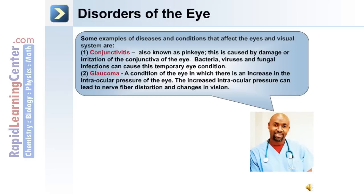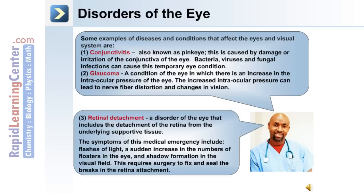Examples of diseases and conditions that affect the eyes and visual system: 1. Conjunctivitis, also known as pink eye, is caused by damage or irritation of the conjunctiva; bacteria, viruses, and fungal infections can cause this temporary eye condition. 2. Glaucoma is a more serious condition involving an increase in intraocular pressure within the eye, which can lead to nerve fiber distortion and changes in vision. 3. Retinal detachment is considered a medical emergency in which the retina detaches from its underlying support tissue. Symptoms include flashes of light, a sudden increase in floaters, and shadow formation in the visual field; it requires surgery to seal the breaks in the retinal attachment.